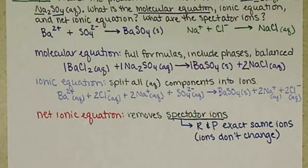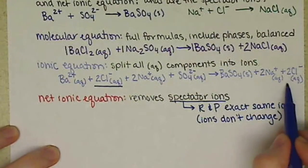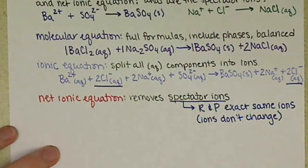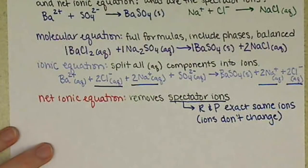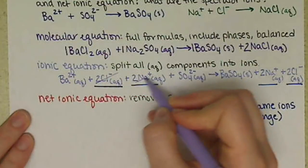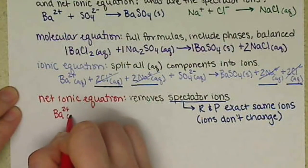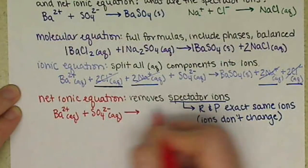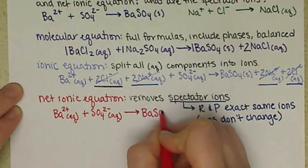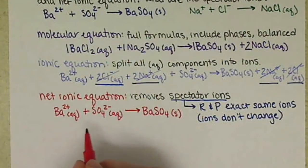For our example, we have 2 chloride ions aqueous in the reactants and 2 chloride ions aqueous in the products, and 2 sodium ions aqueous in the reactants. For the net ionic equation, we eliminate those because they're not actively participating in the chemical change. So we end up with barium ion plus sulfate ion forming barium sulfate — this is the chemistry that's happening, the change that is occurring.